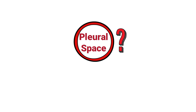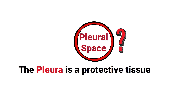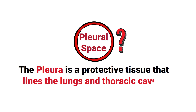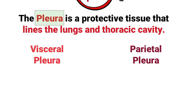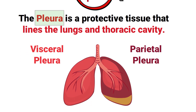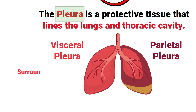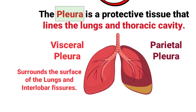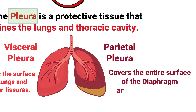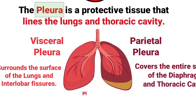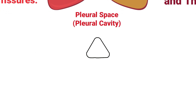The pleura is a protective tissue that lines the lungs and thoracic cavity. There are two types of pleura: visceral and parietal. The visceral pleura surrounds the surface of the lungs and interlobar fissures. The parietal pleura covers the entire surface of the diaphragm and thoracic cavity. The space in between is known as the pleural space, or pleural cavity.